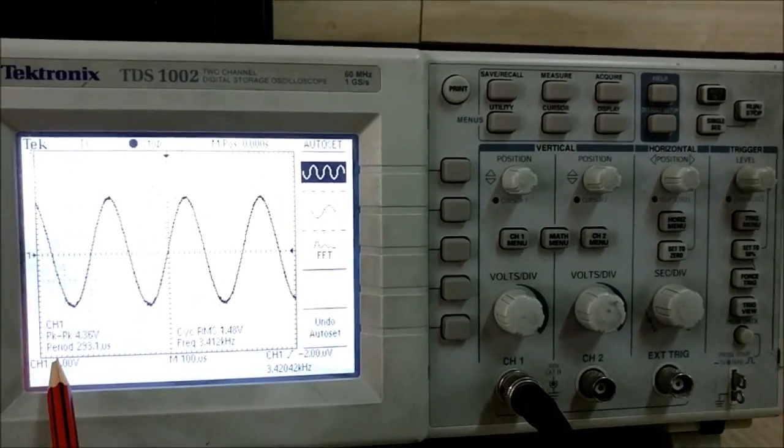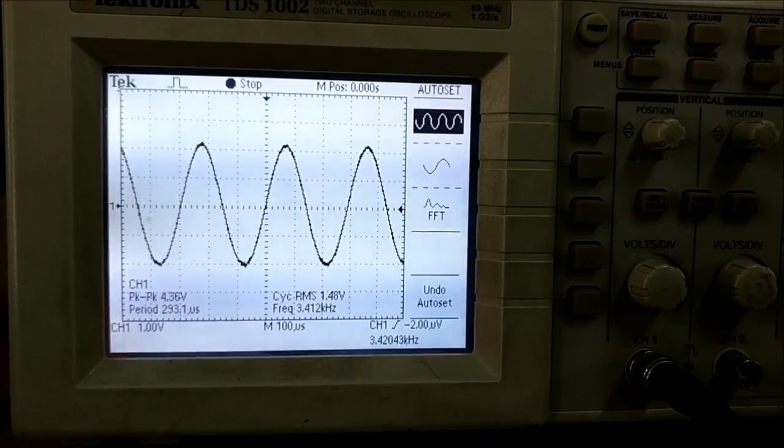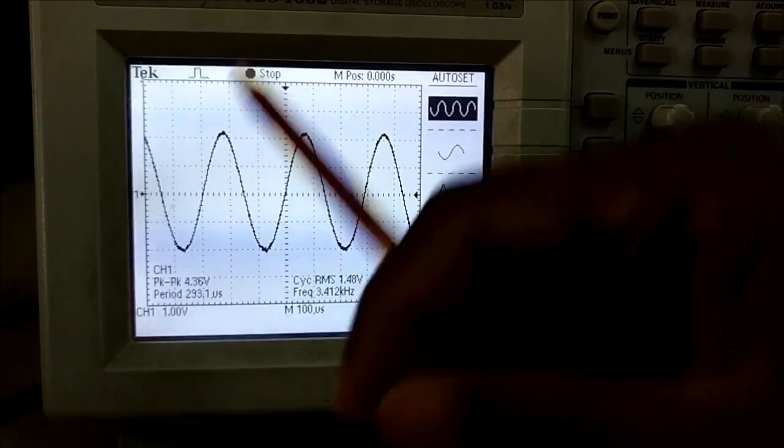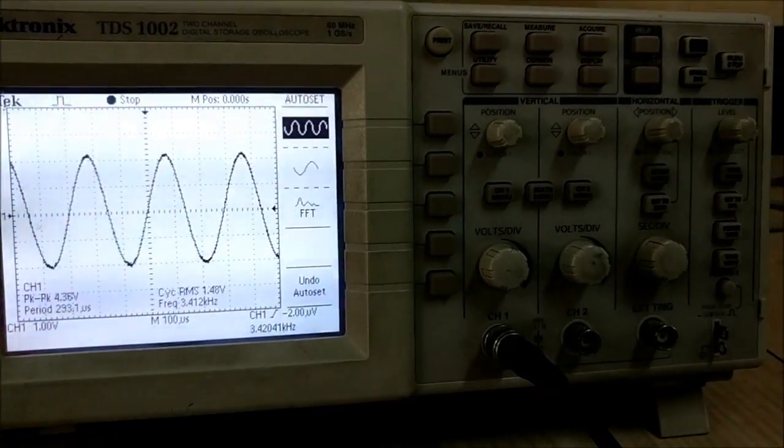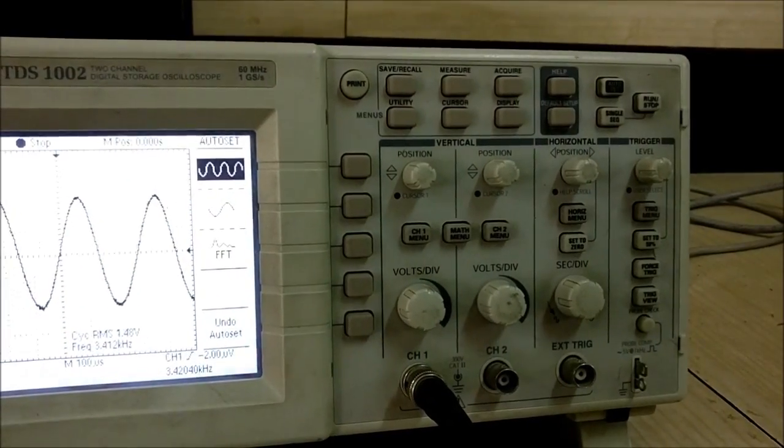Now we can see the static data. The peak to peak voltage is 4.36V and frequency is 3.412 kHz. This is automatically set. Now if you want to check manually whether the signal is of the same frequency and amplitude, we need to use the measure button.